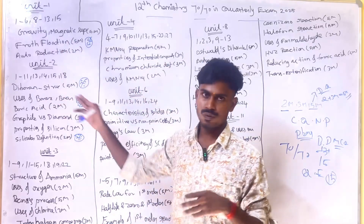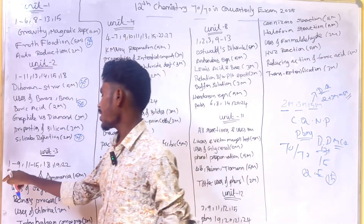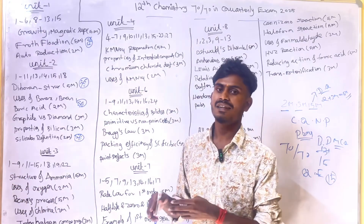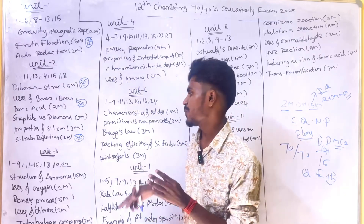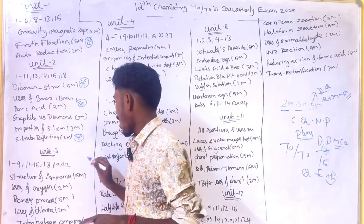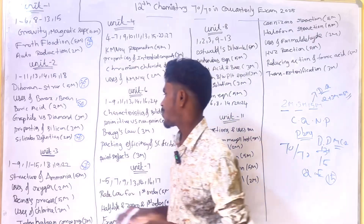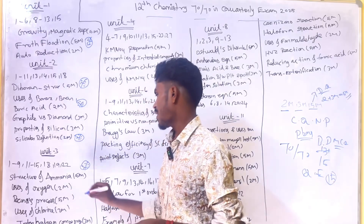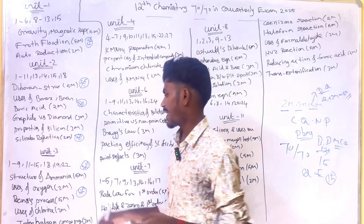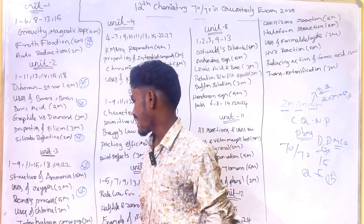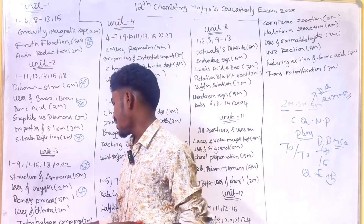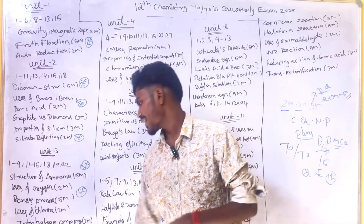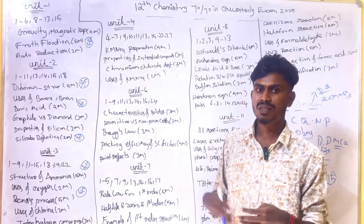Unit 3 — P Block Elements 1 and P Block Elements 2: Questions 1, 2, 9, 11, 15, and 18, 19, 22 are important. Structure of Ammonia is important. Uses of Oxygen is a 2 mark question. Deacon Process is very important. Interhalogen compounds are covered in 3 marks. Uses of Noble Gases is a 2 mark question. Sometimes a combination 5 mark question appears.